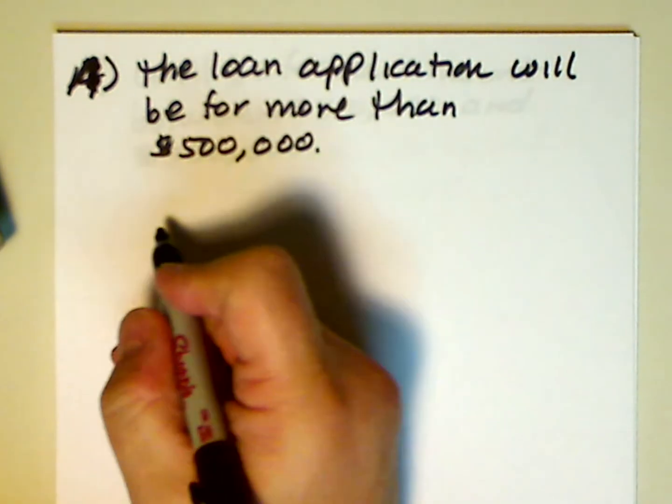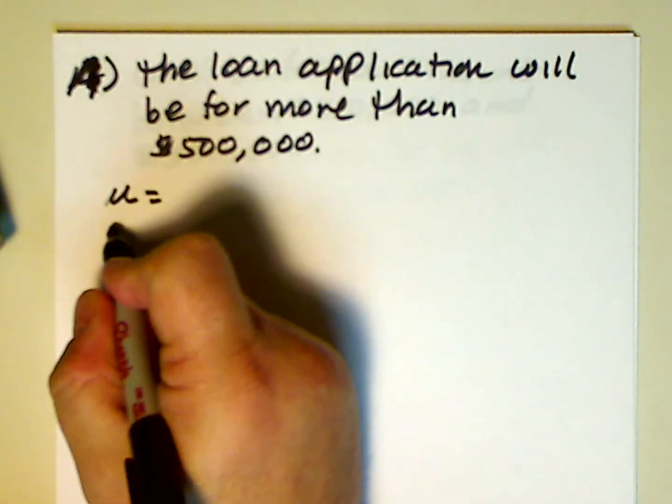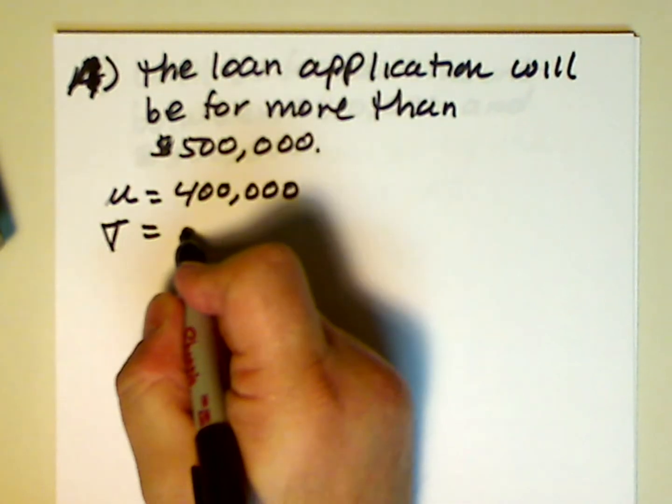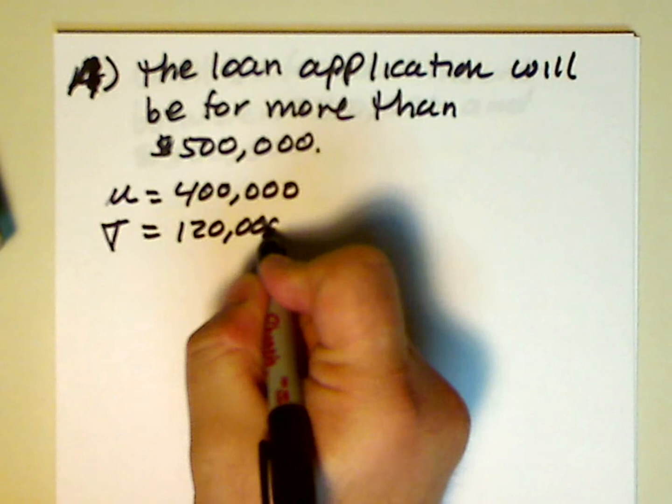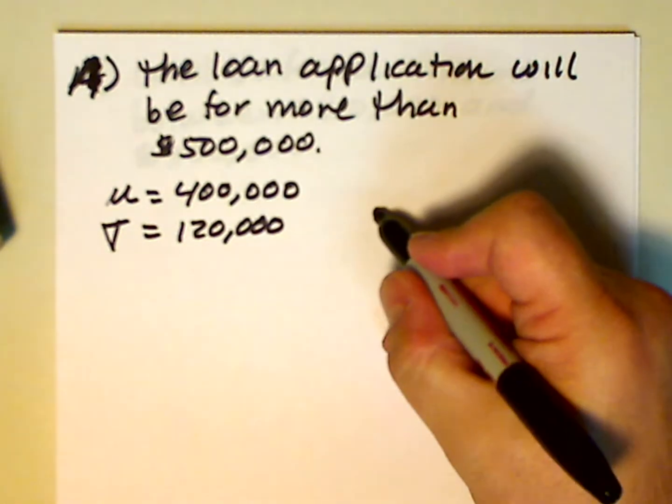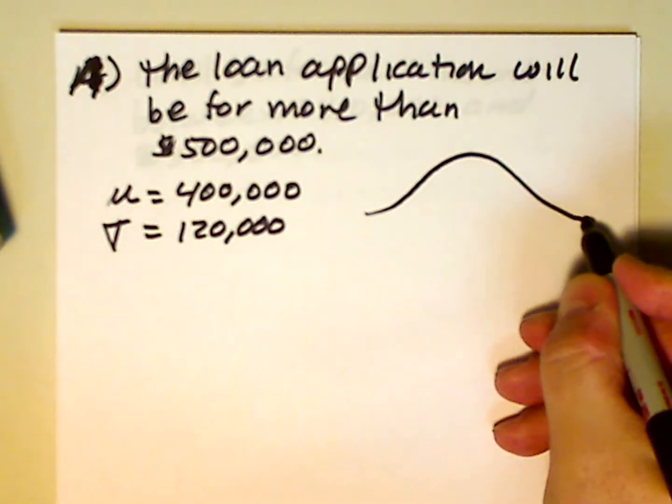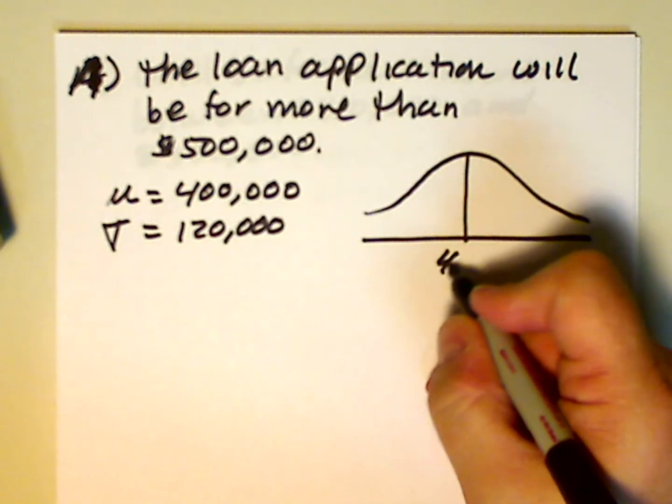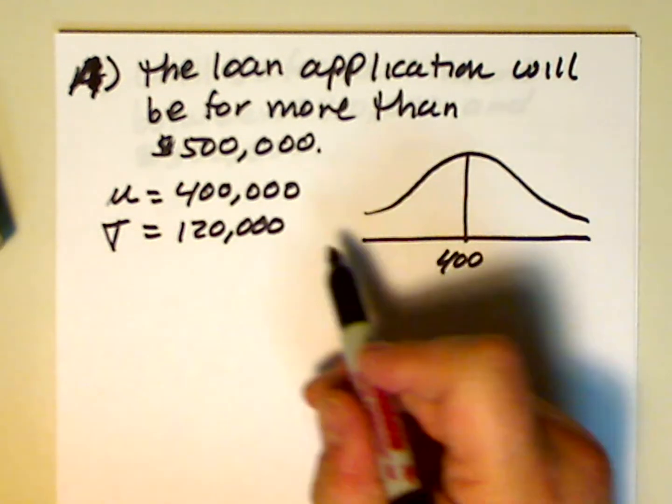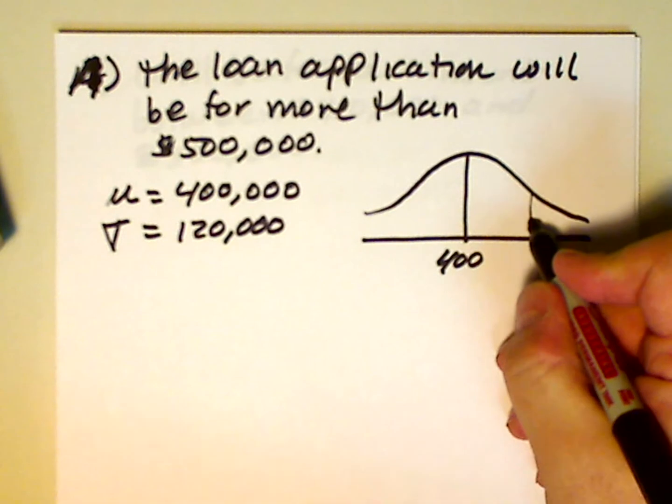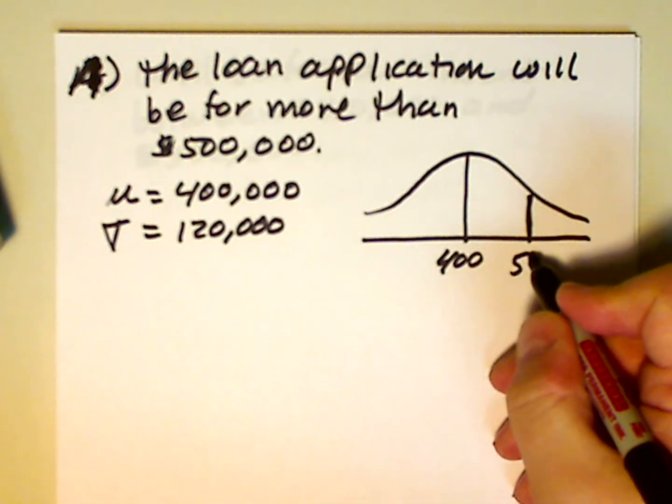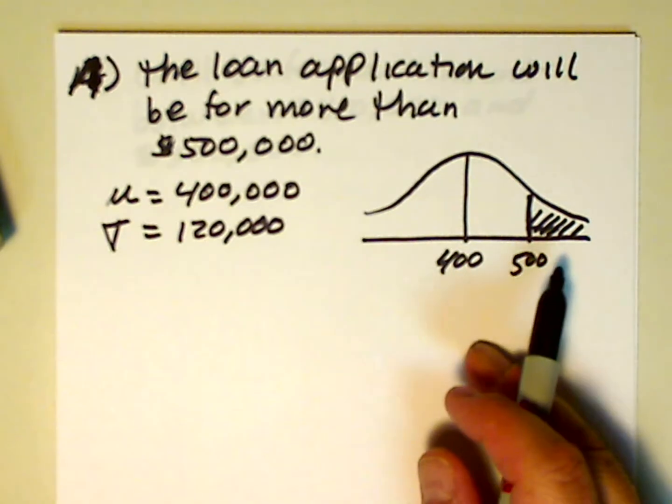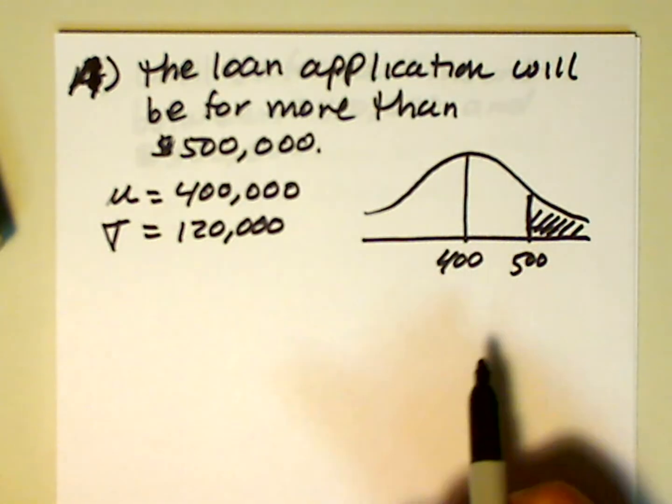Well, the first thing I have my students do is write down what the mean and the standard deviation are. In this case, it's μ = 400,000 and σ = 120,000. And then I have them draw a picture. So here's the picture. This is supposed to be the normal distribution. The mean is $400,000 and we're interested in the region greater than $500,000. So remember to always draw a picture and always shade the region in which you're interested.